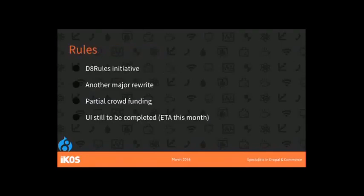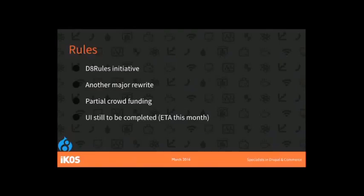Not only have you got Commerce waiting for core, you've got contributed Commerce modules waiting for Commerce to come out — so you've got this double-step delay. Then there's the Rules module, one of the most complex modules. There was a fundraising initiative so that Wolfgang, the original maintainer, could be employed to get it done — partially successful. As of last night, we are still waiting for the UI part of Rules. You're reliant on people's volunteer time, so you can't project exactly when things will happen.